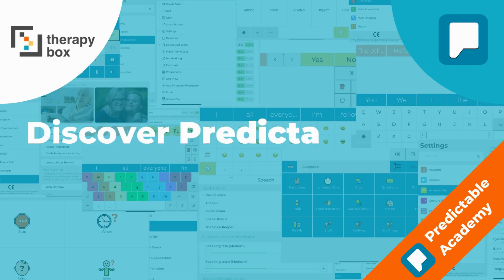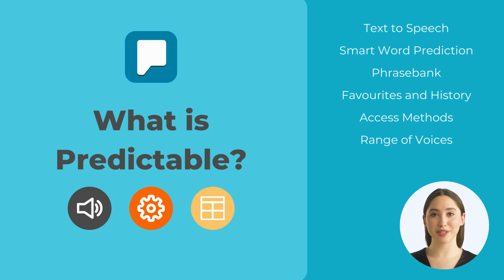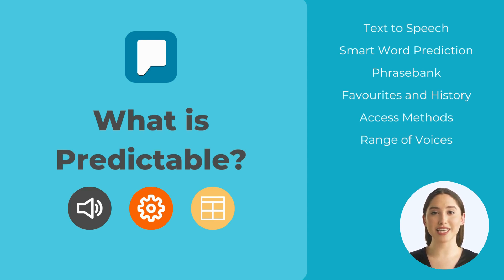Discover Predictable in 5 minutes. Predictable is a text-to-speech app for people with conditions such as MND, autism, cerebral palsy, Down syndrome, and more. It uses smart word prediction technology to make speaking and typing more efficient.